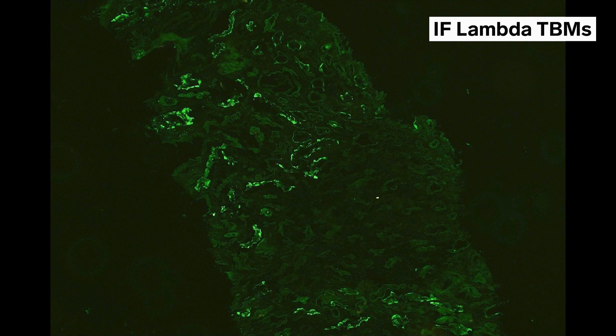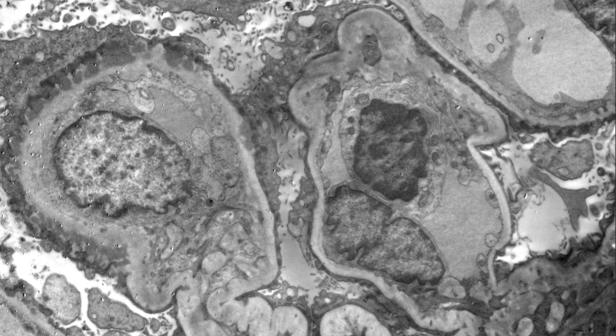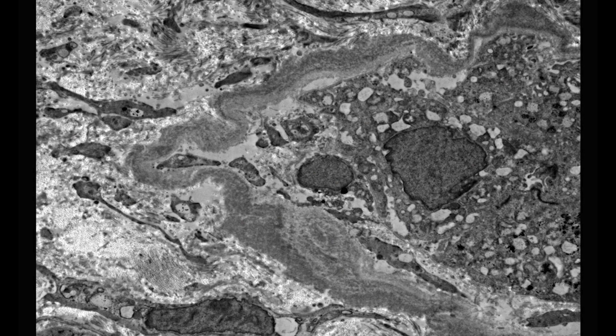Are there deposits on EM that match the IF deposits? On electron microscopy, we can see a capillary loop that shows numerous subepithelial electron-dense deposits. Some capillary loops have numerous subepithelial deposits, while other capillary loops don't have any deposits. Moving on to the tubular basement membranes, we can see there are numerous powdery deposits lining the tubular basement membranes. To summarize, we have a segmental membranous glomerulopathy and kappa-restricted light chain deposition disease.